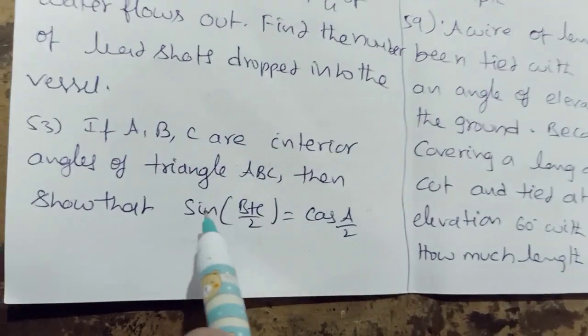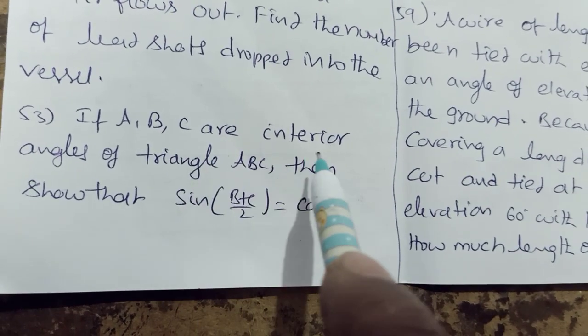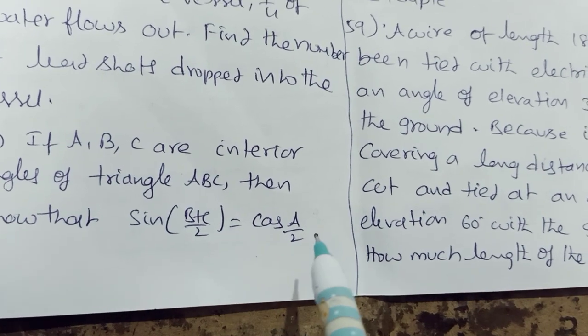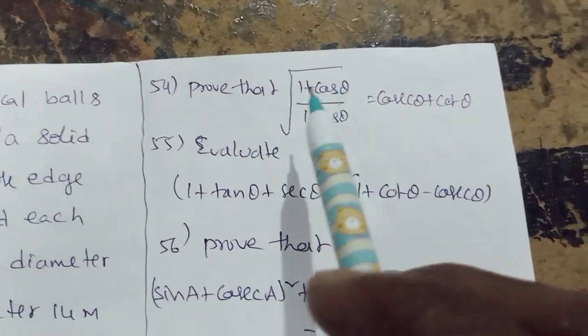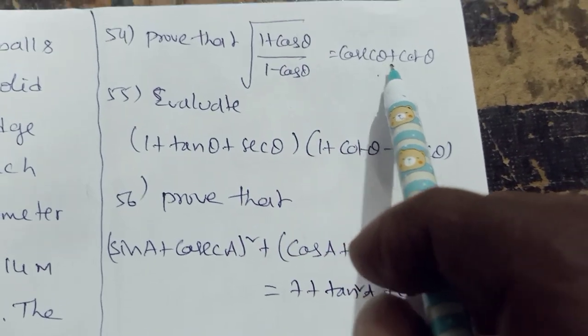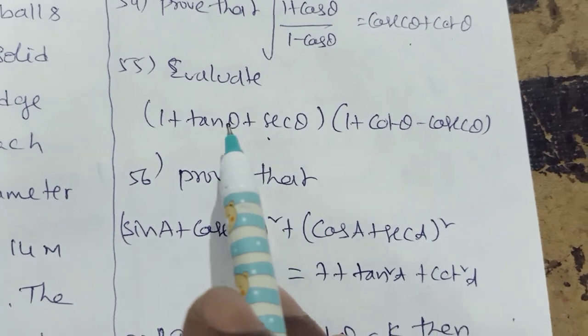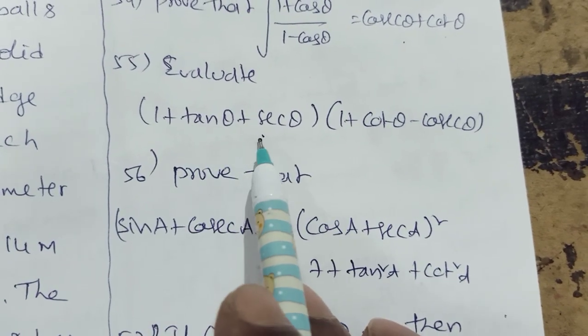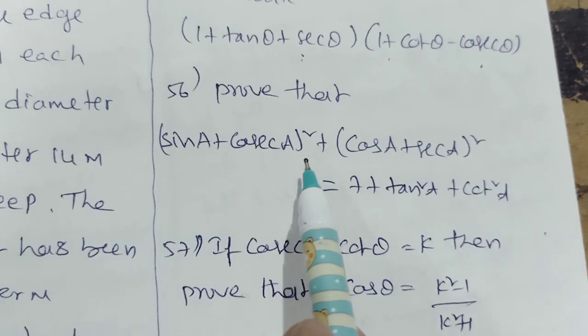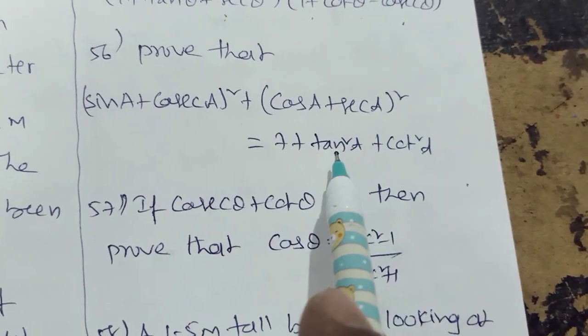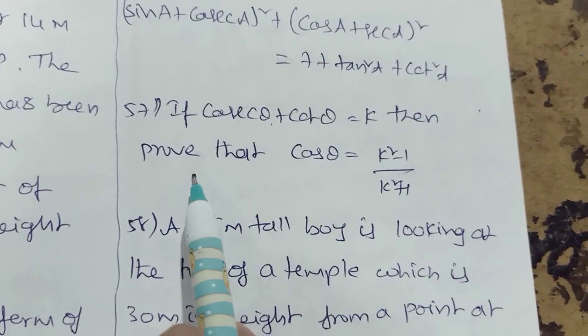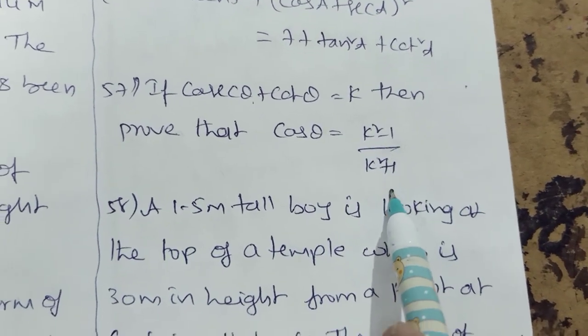Trigonometry. If A, B, C are interior angles of a triangle ABC, then show that sin of B plus C by 2 is equal to cos A by 2. Prove that square root of 1 plus cos theta by 1 minus cos theta equal to cosecant theta plus cot theta. Evaluate 1 plus tan theta plus secant theta into 1 plus cot theta minus cosecant theta. Prove that sin A plus cosecant A whole square plus cos A plus secant A whole square equal to 7 plus tan square A plus cot square A. If cosecant theta plus cot theta equal to k, then prove that cos theta equal to k square minus 1 by k square plus 1.